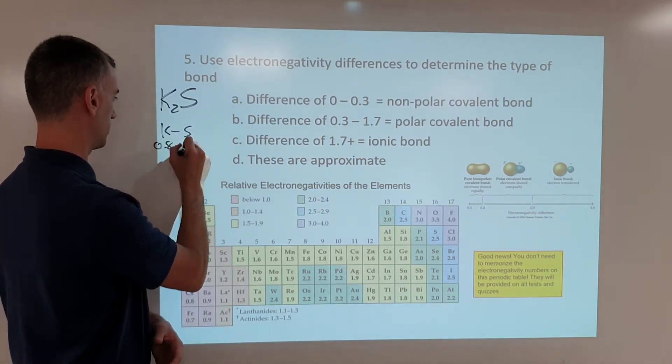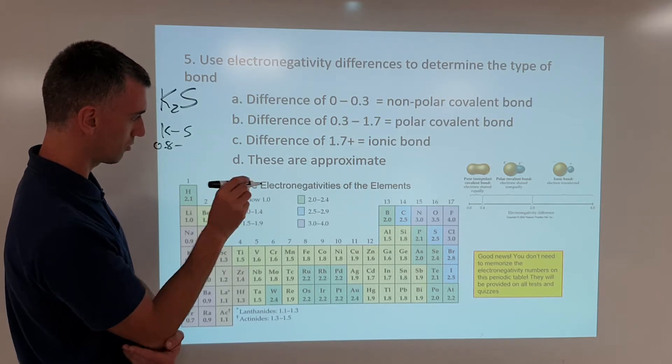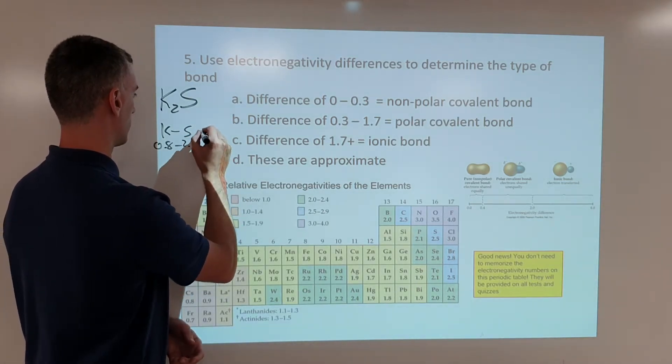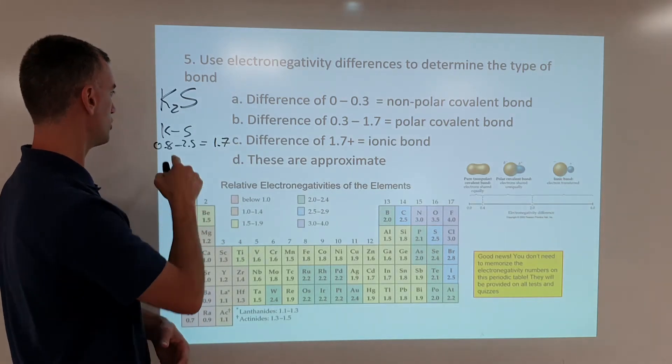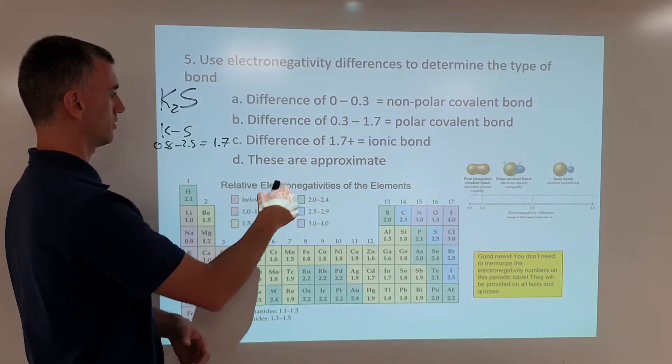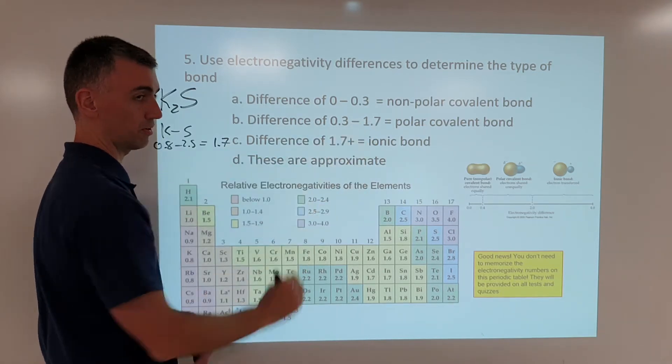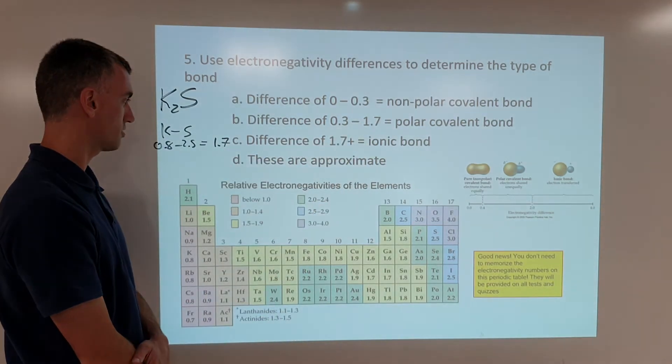That's a difference of 1.7. So the question is, for potassium sulfide, is it ionic or is it polar covalent? And the answer is,